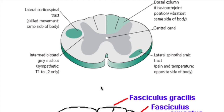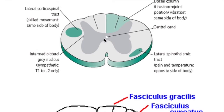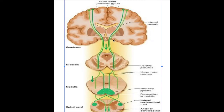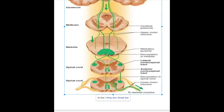The posterior column fibers decussate in nucleus cuneatus and nucleus gracilis and cross over to the opposite side. Therefore, a lesion in the posterior column will affect the ipsilateral side. The lateral corticospinal tract crosses over in the medulla to form the pyramidal decussation, crossing to the opposite side.